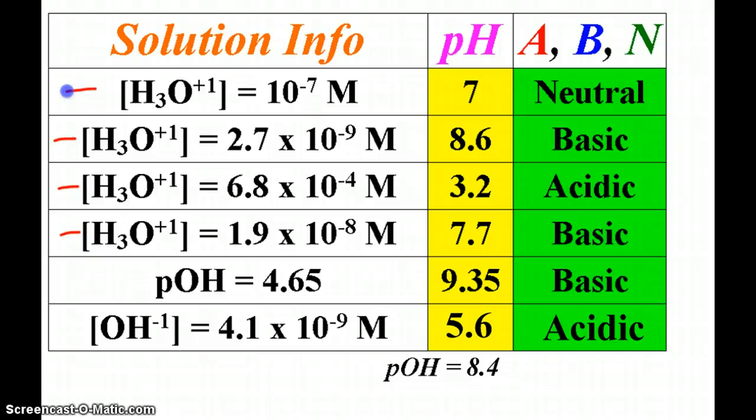If it's a simple concentration like 10 to the negative 7, then of course the pH will just be 7. But if it's more complex, then you'll have to use the log function.